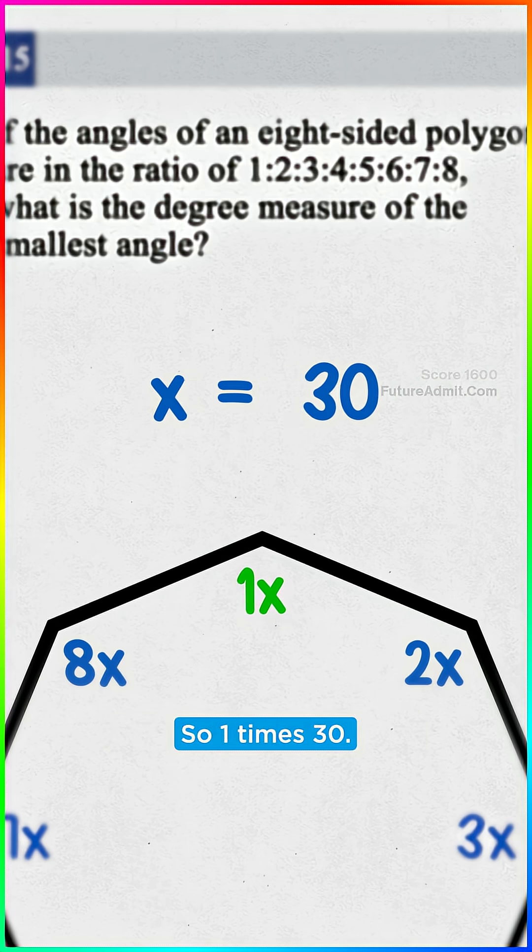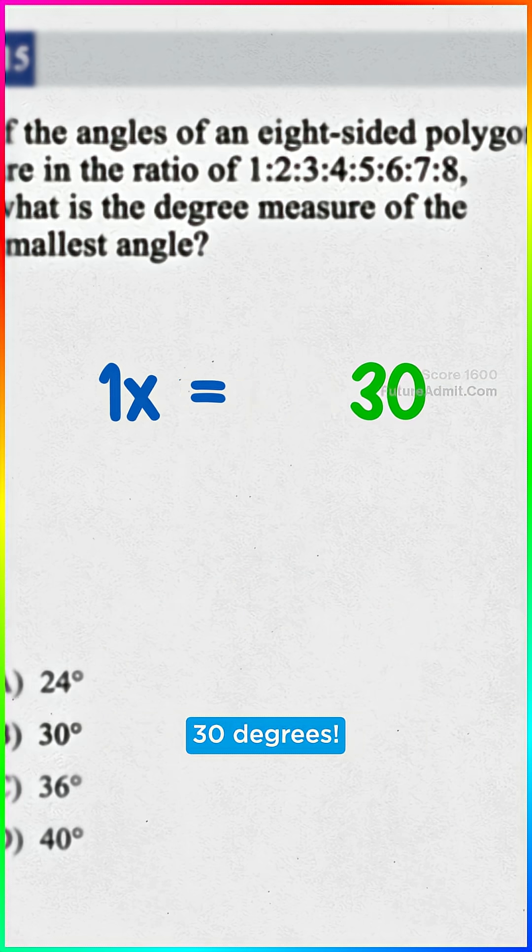The smallest angle is one X. So one times 30, 30 degrees. Sweet, it's B.